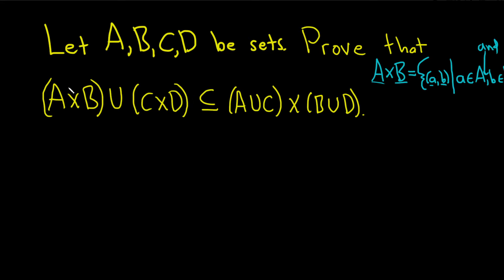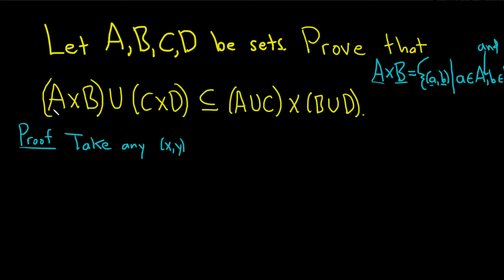To show one set is a subset of another, you have to show that every single element in this set is also in this set. So we'll start by taking an element in this set. I'll use X and Y rather than A and B to avoid confusion. Take any ordered pair (x, y) in the union — so A cross B union C cross D.